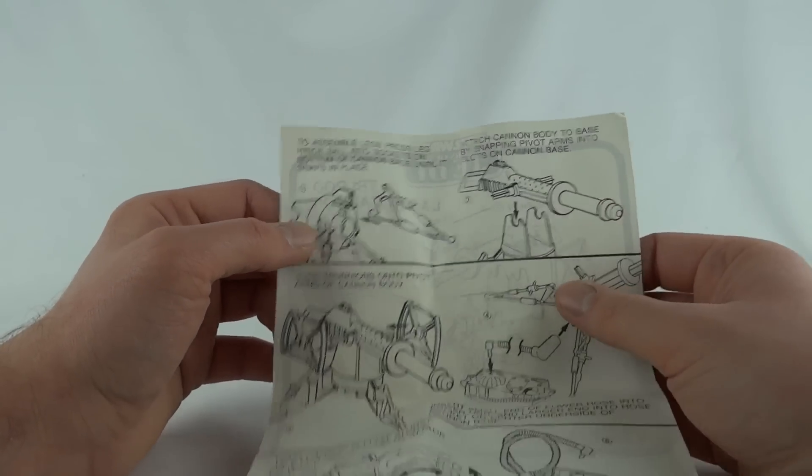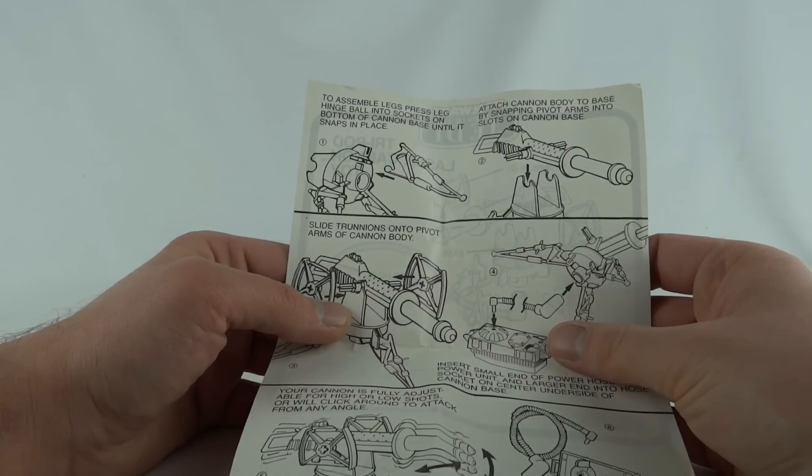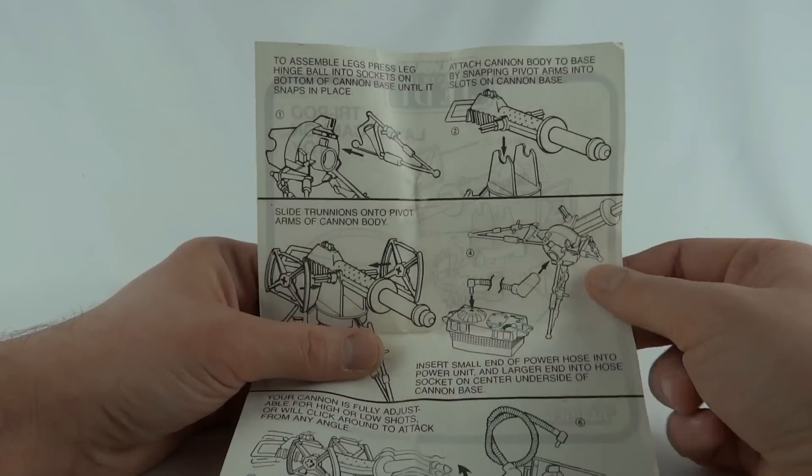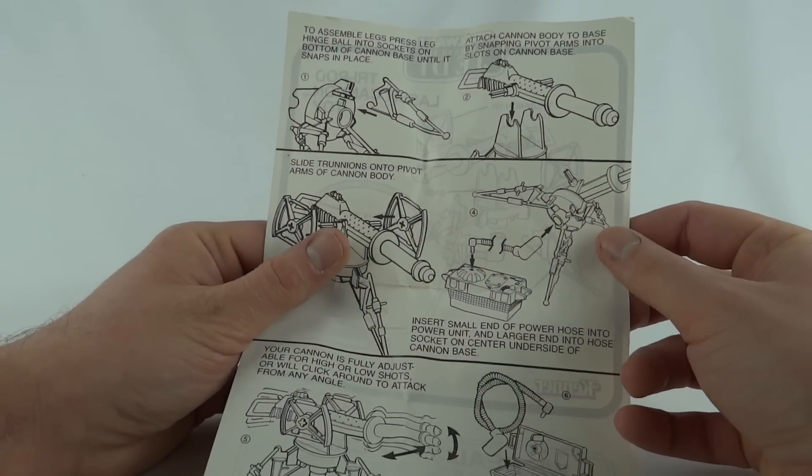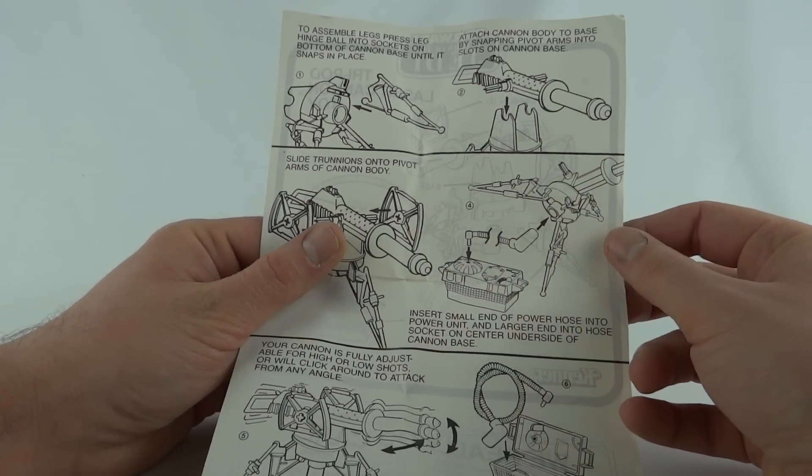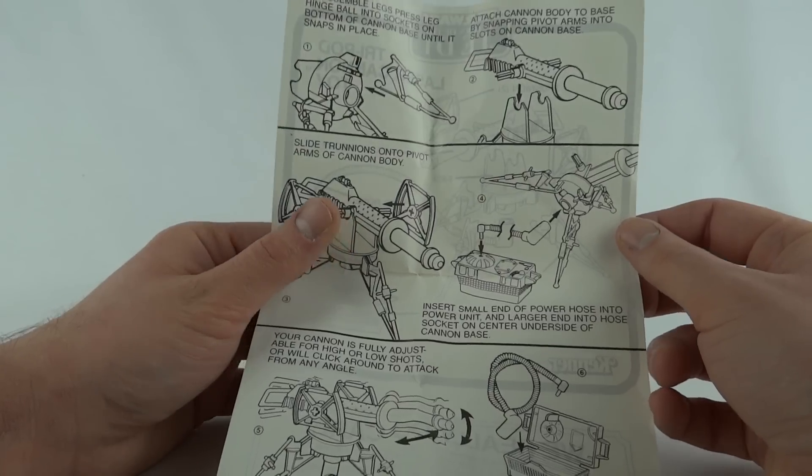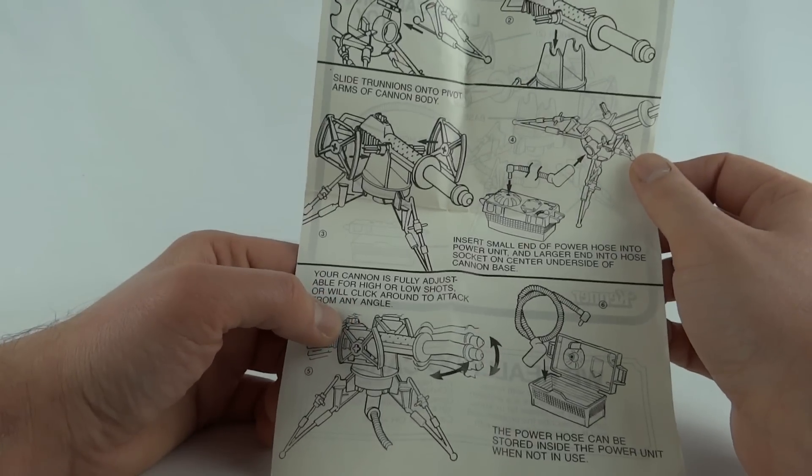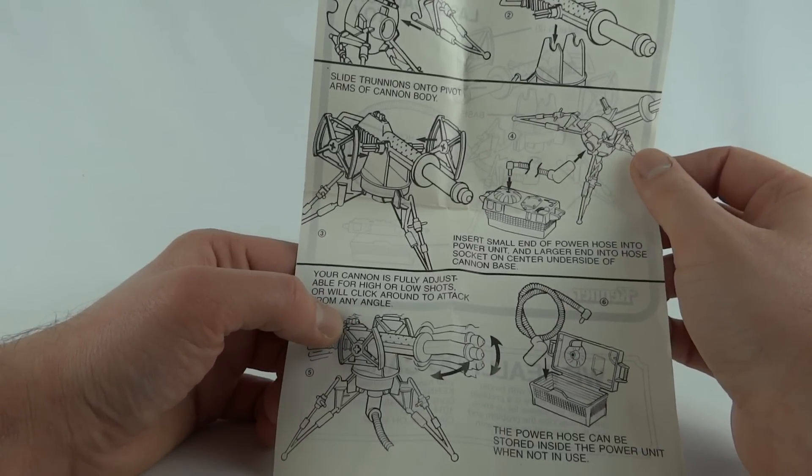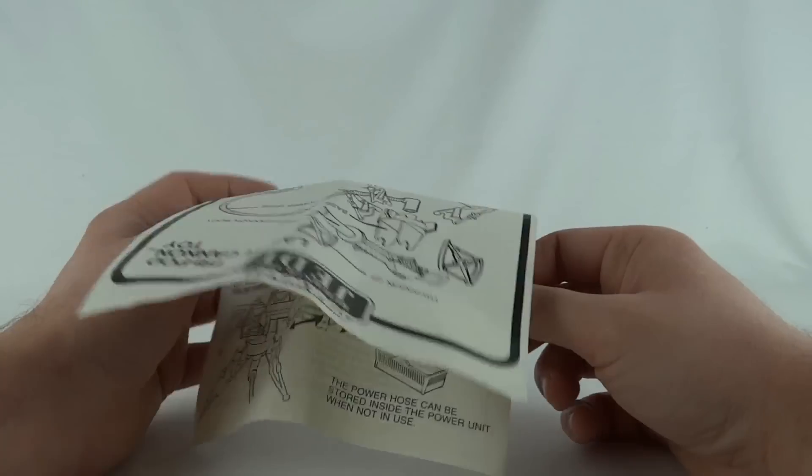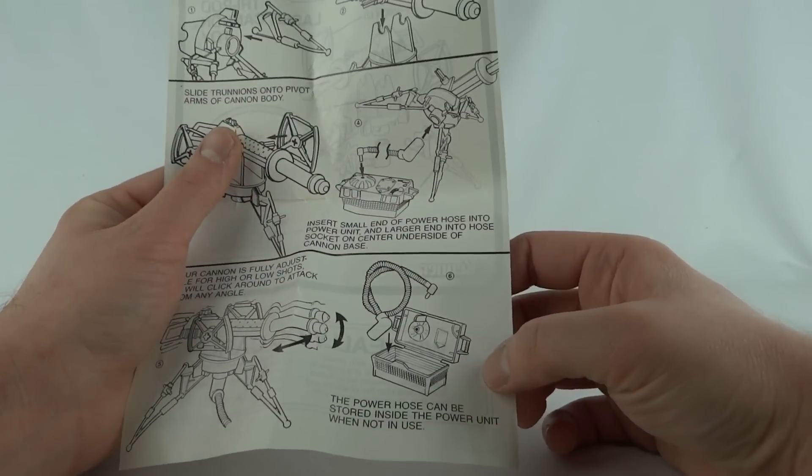Slide trunnions onto pivot arms of cannon body. Insert small end of power hose into power unit and larger end of hose into socket on center underside of cannon base. Your cannon is fully adjustable for high or low shots and will click around to attack from any angle. The power hose can be stored inside the power unit when not in use.